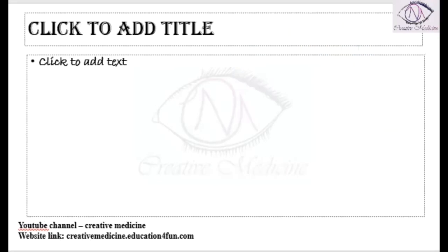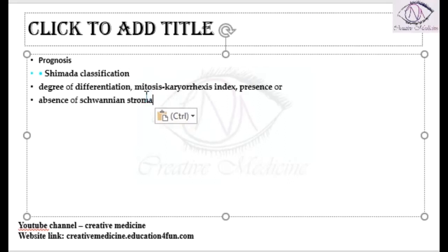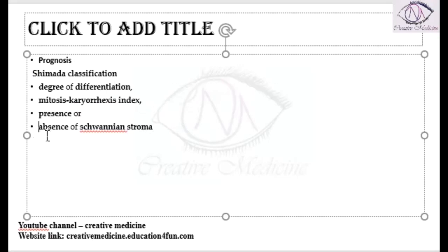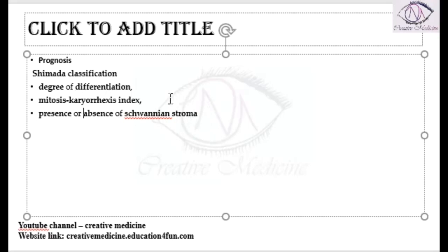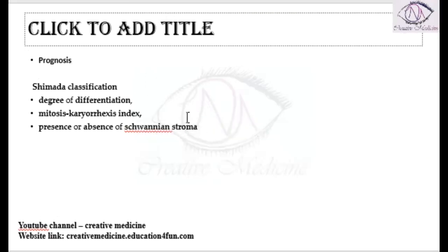For the prognosis of neuroblastoma, we have a classification called the Shimada classification, which describes the prognosis of neuroblastoma. It takes into account the degree of differentiation, mitosis-karyorrhexis index, and the presence or absence of schwannian stroma. With the help of these three characteristic features, it tells us about the prognosis of neuroblastoma.